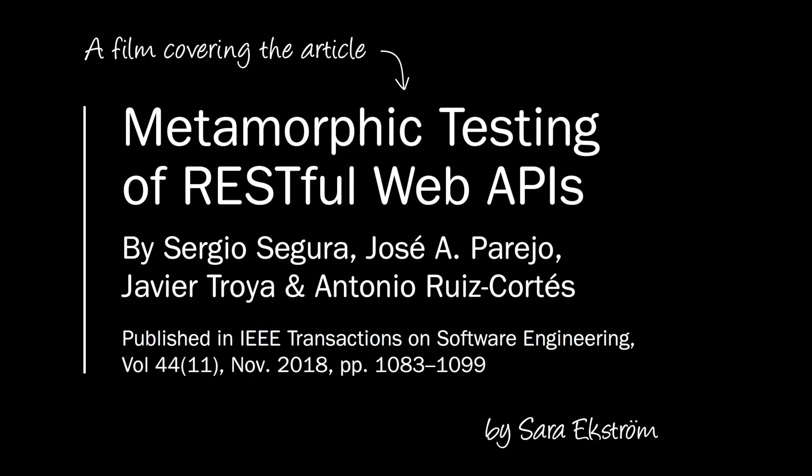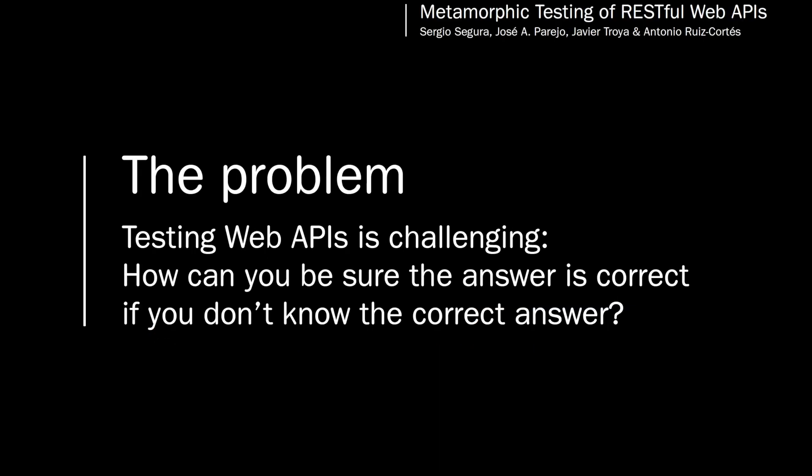This film covers the published article 'Metamorphic Testing of RESTful Web APIs'. Testing web APIs is challenging due to the difficulty of assessing the correctness of the responses. How can you be sure that the answer you get is correct and complete if you don't know the correct answer beforehand?